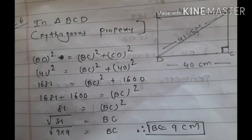Now question 7th: Find the perimeter of the rectangle whose length is 40 cm and diagonal is 41 cm. तो यहाँ पर मैंने rectangle बनाया है, उसकी length 40 cm है और rectangle में opposite sides होती हैं. तो CD 40 है, तो AB भी 40 होगी.